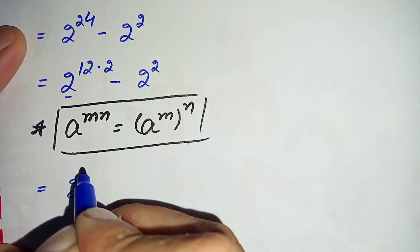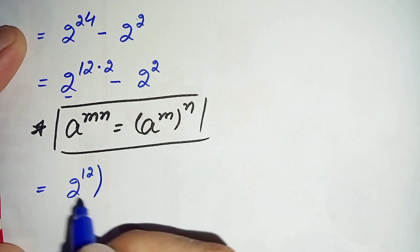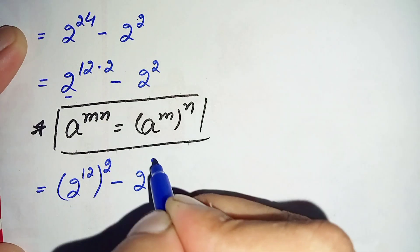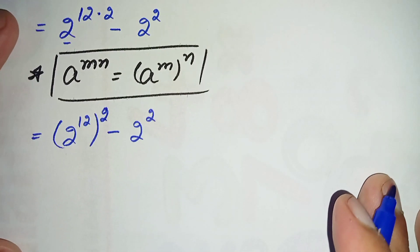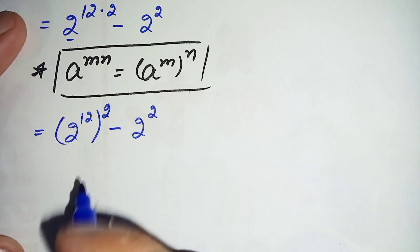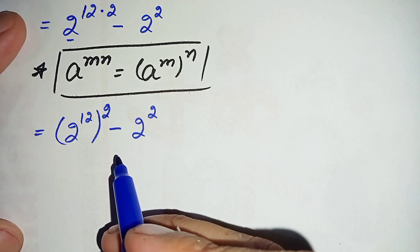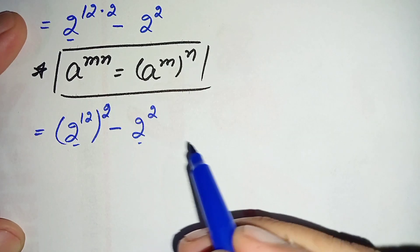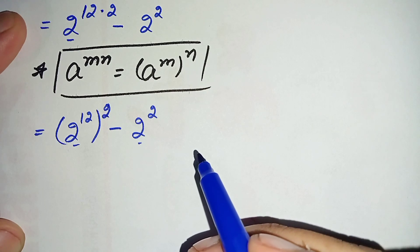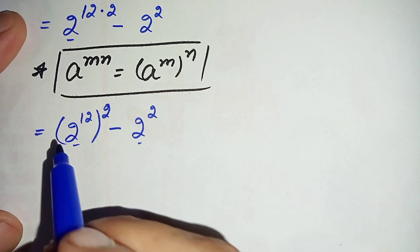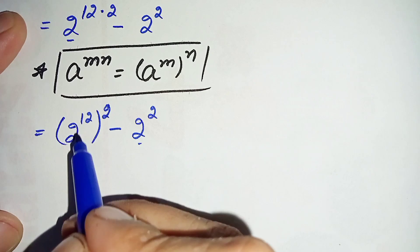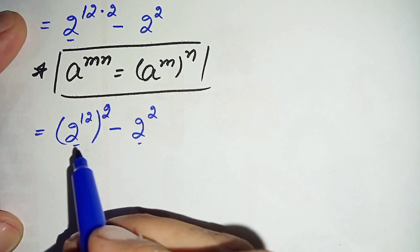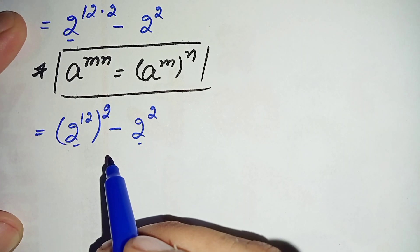Using this identity, the equation becomes 2 raised to power 12, whole raised to power 2, minus 2 raised to power 2. There are two approaches to solve this further: one is to use the algebraic identity a squared minus b squared, and the second is to find the value of 2 raised to power 12 and use the a plus b whole square identity. Here I will use the second approach.